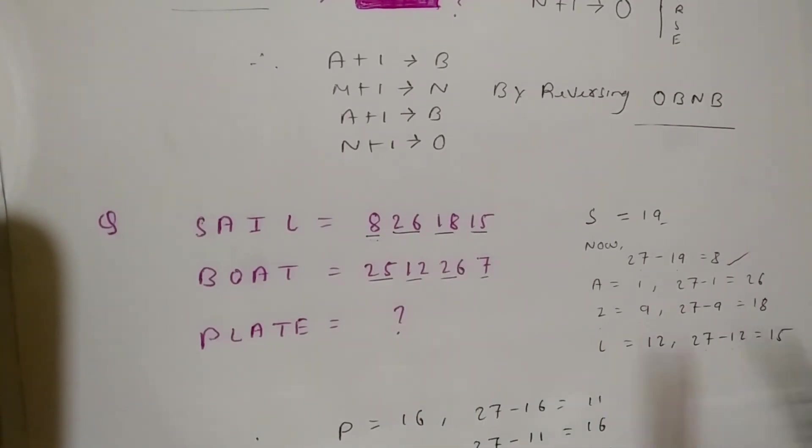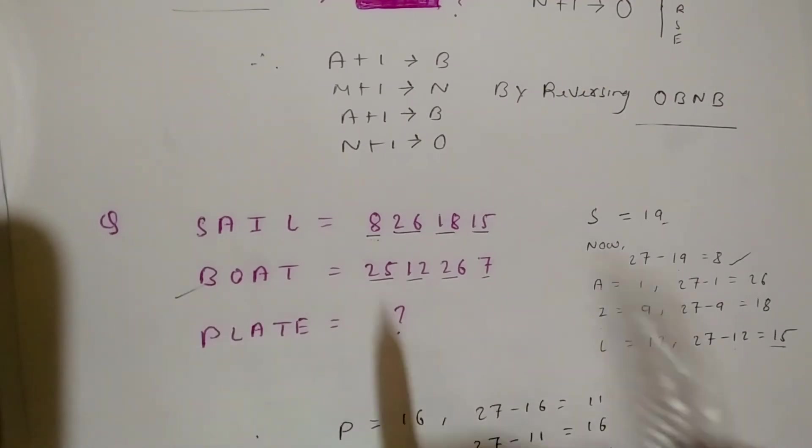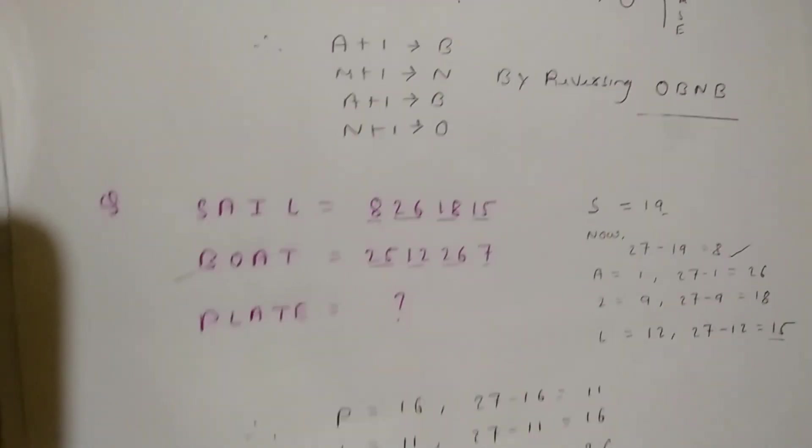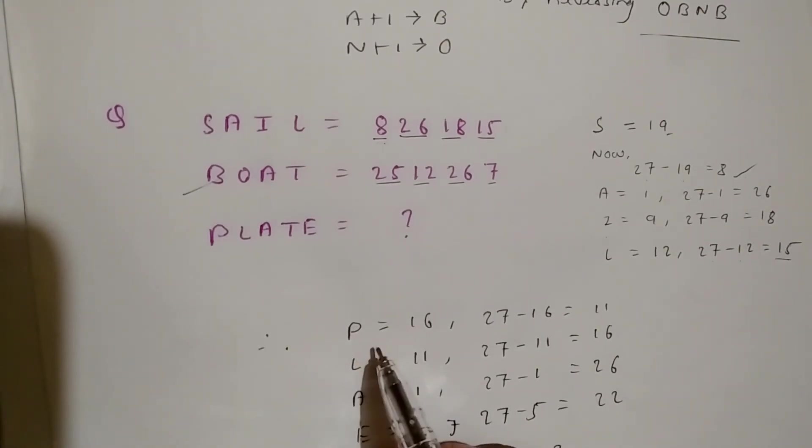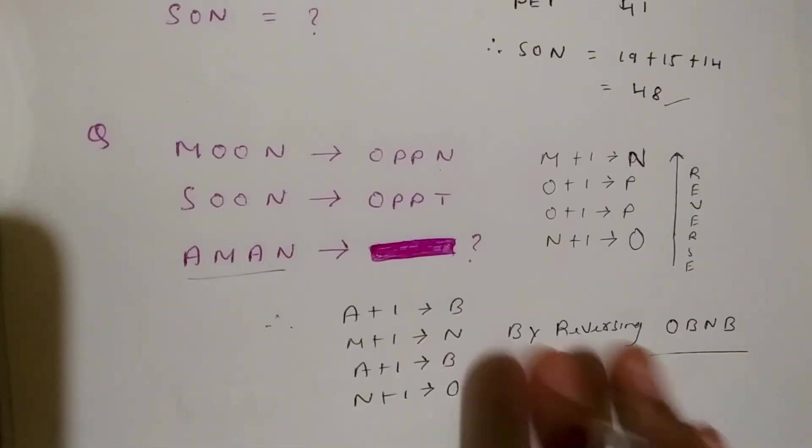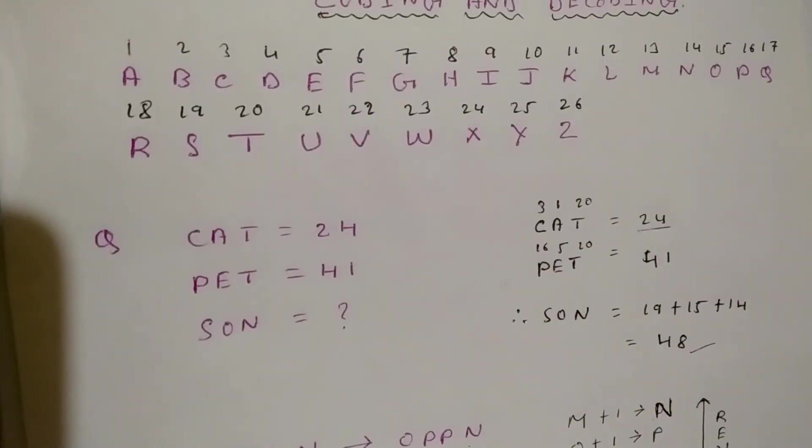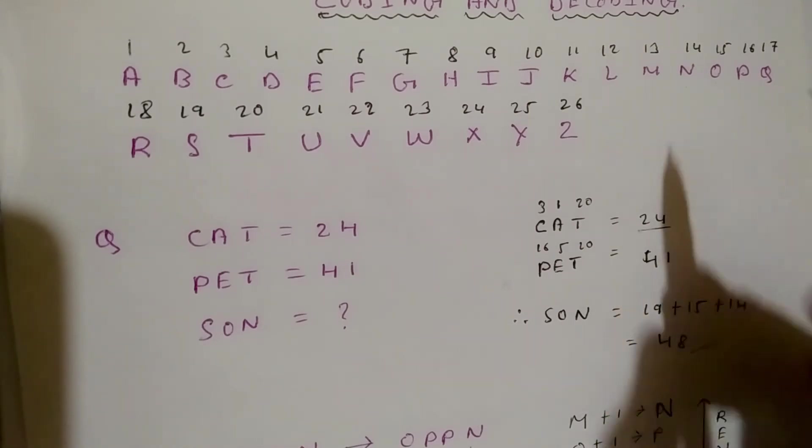Now we can find the trick and apply it for PLATE. What is the numerical value of P? It's 16. For this, I advise you to firstly write this down so you can get all these numbers. P - what is the value of P? 16.